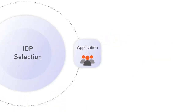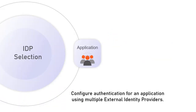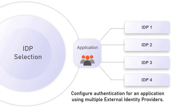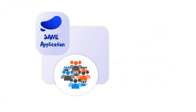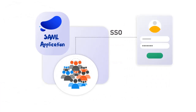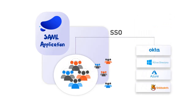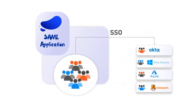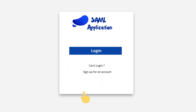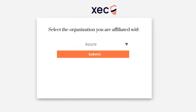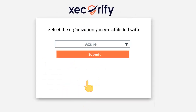Now let's see login using the IDP selection page. This functionality of the miniOrange identity broker service allows you to configure authentication for an application using multiple external identity providers. For example, you could have a SAML application that needs SSO but your users' identities are distributed among different identity providers like Okta and Active Directory.